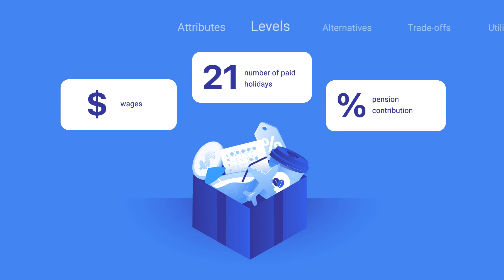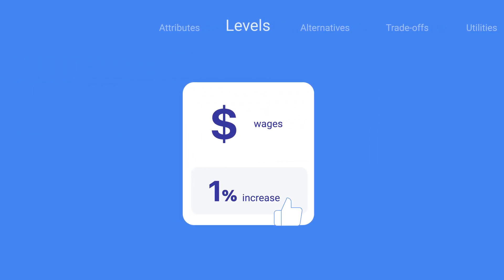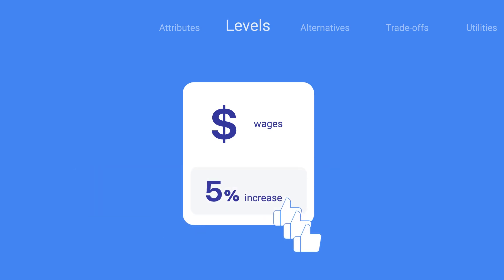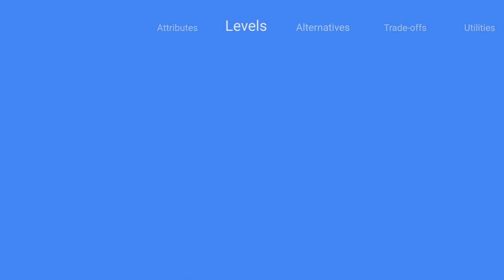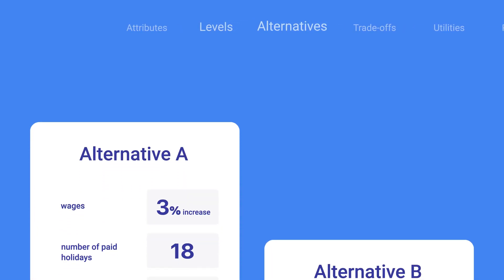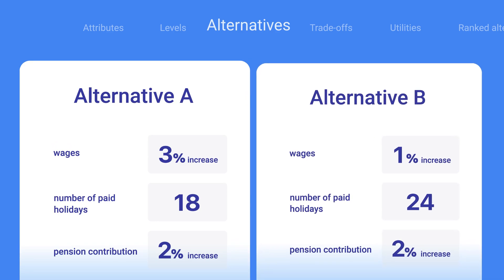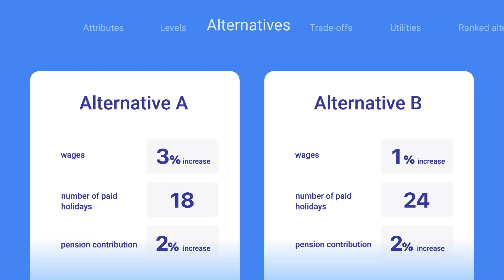We can offer different levels on each of these attributes. For example, in terms of wages, we could see how employees feel about a 1% increase, a 3% increase, or a 5% increase. By combining different levels of our attributes, we can create different benefits packages. These different packages would be called alternatives or concepts in a Conjoint Analysis.